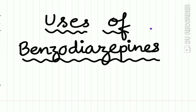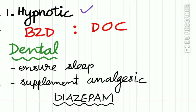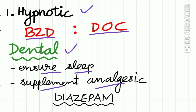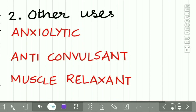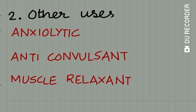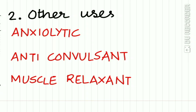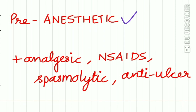Uses of benzodiazepines: firstly, hypnotic use — benzodiazepine is the drug of choice. In dentistry, a dentist can prescribe a benzodiazepine to ensure sleep for an apprehensive patient before dental surgery, and it can supplement analgesia — diazepam is most commonly used for this. Other uses include as an anxiolytic, anticonvulsant, muscle relaxant, pre-anesthetic medication, and alongside an analgesic as a spasmolytic or anti-ulcer agent.